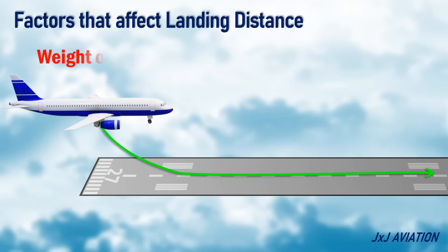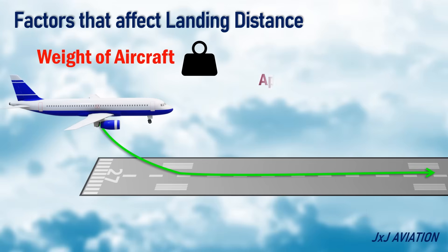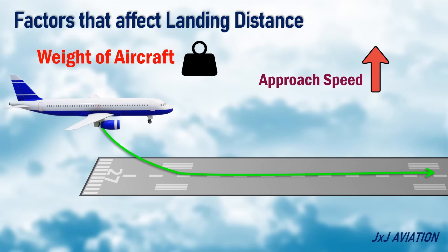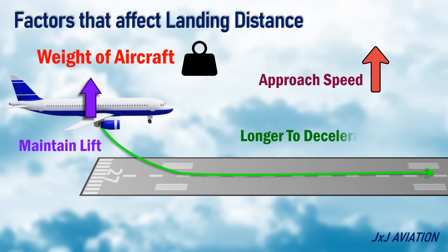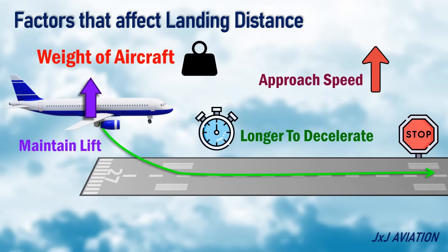Weight of aircraft. A heavier aircraft means the approach speed will be higher to maintain the lift. More speed means the aircraft will take longer to decelerate to a complete stop from its approach speed, so the landing distance would increase.